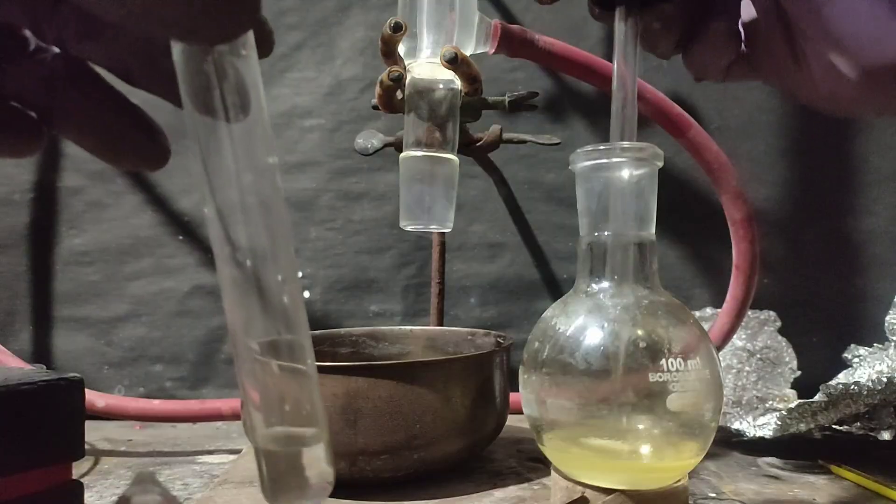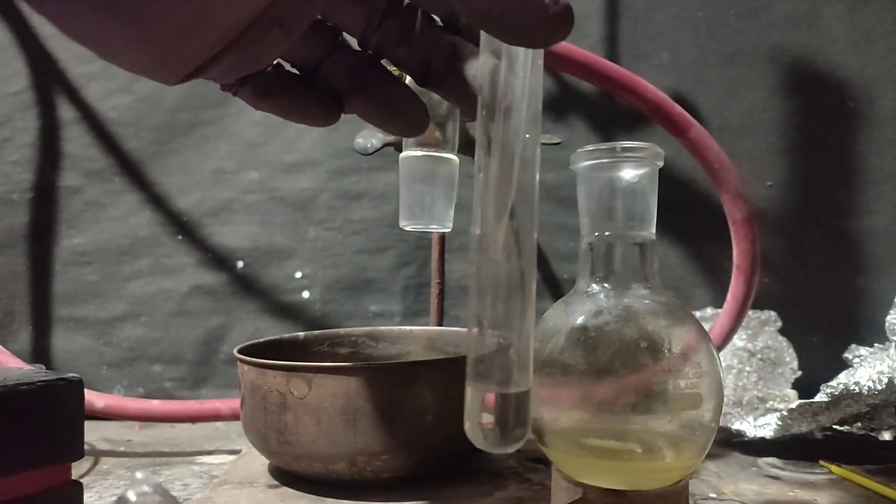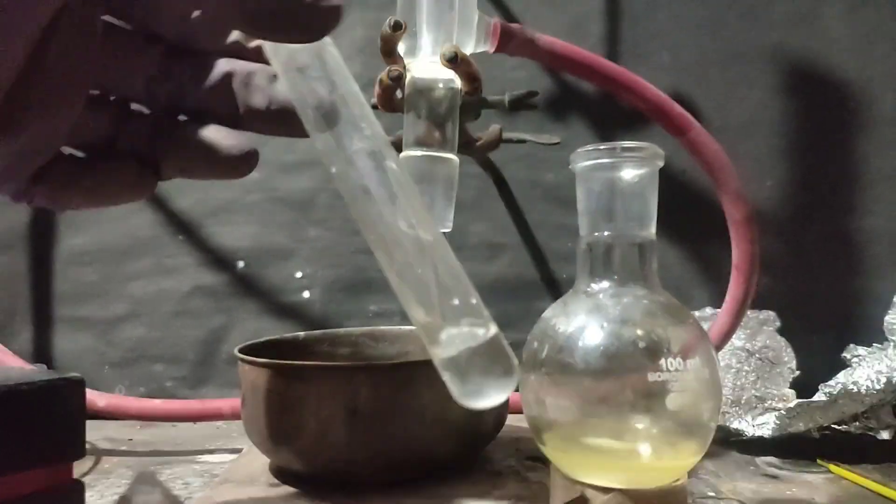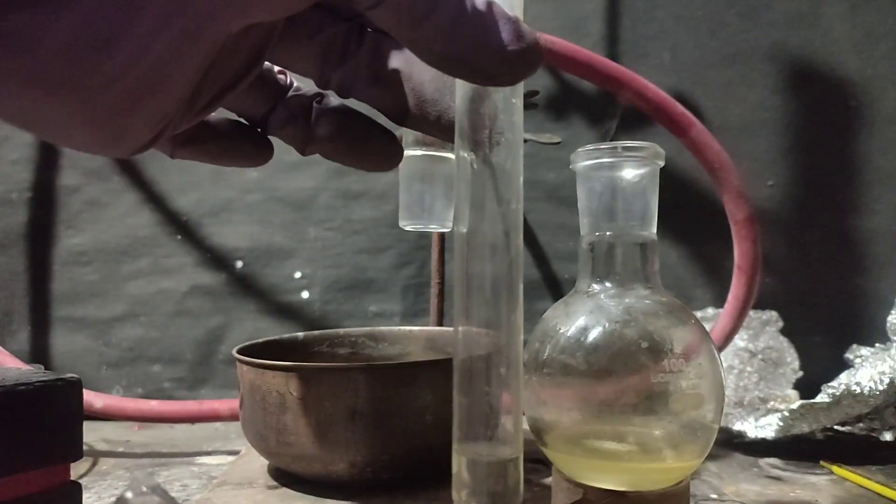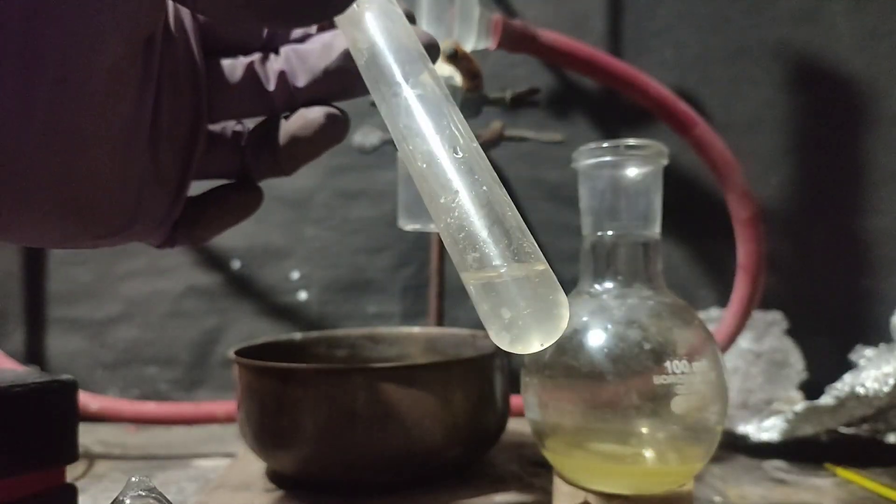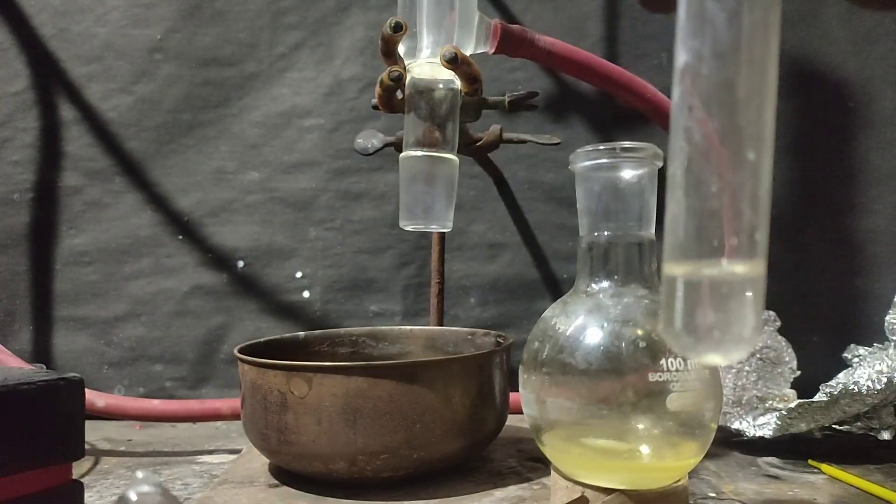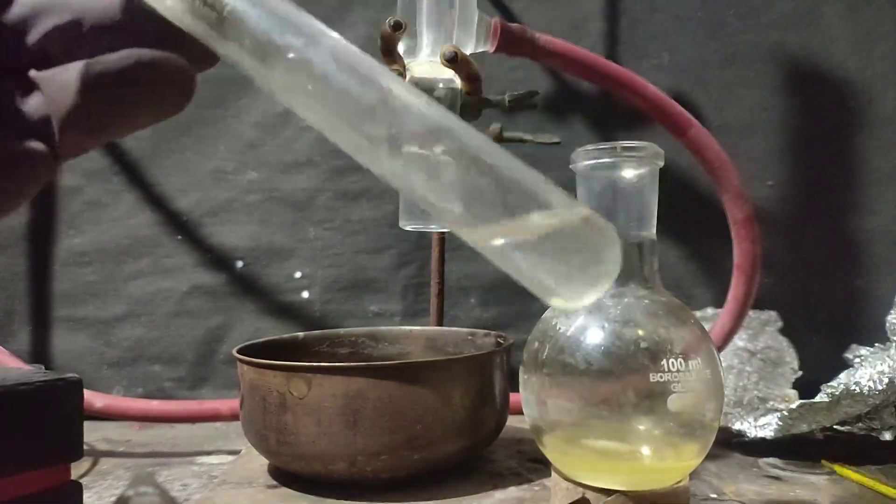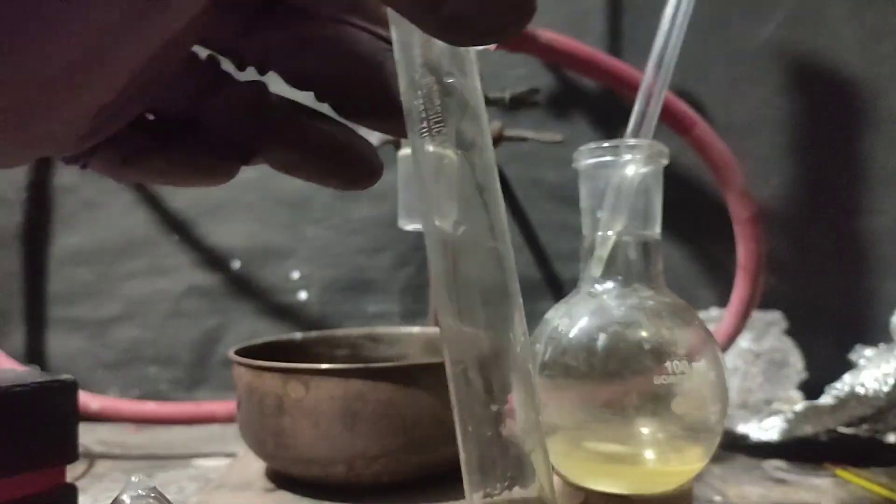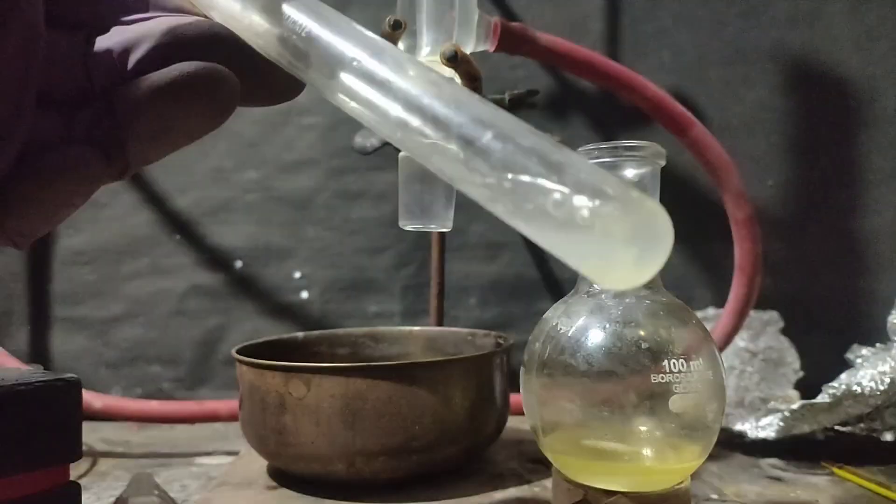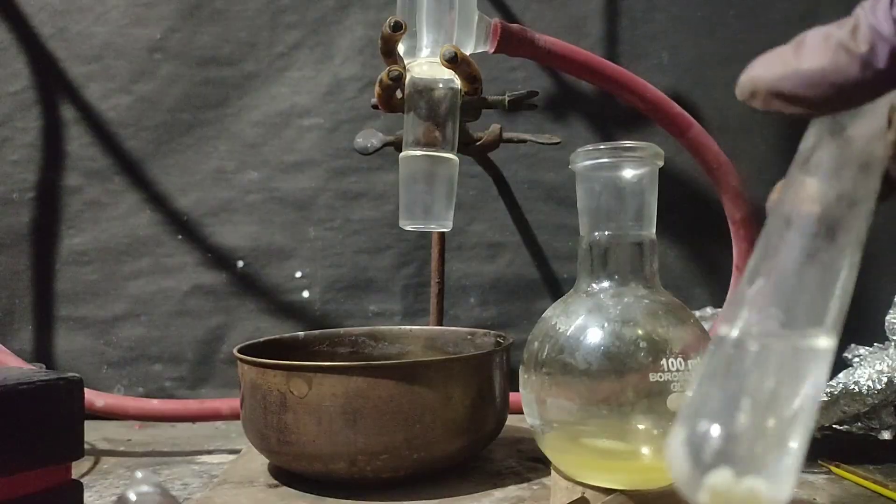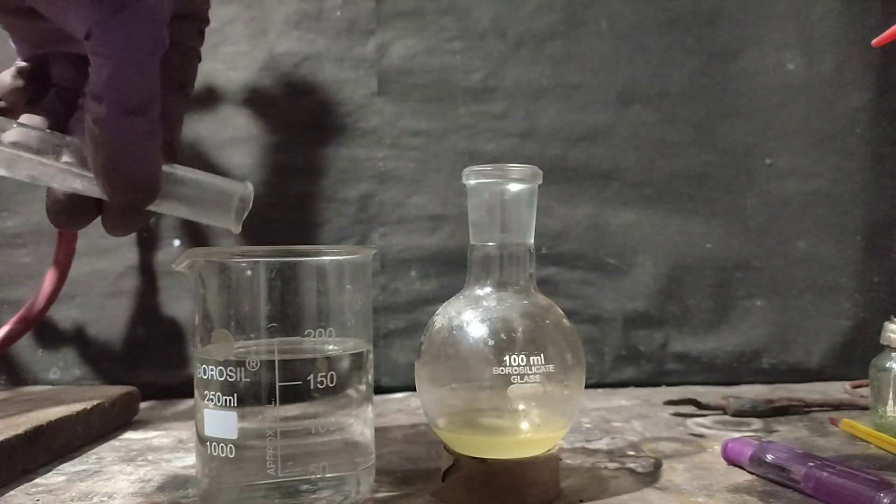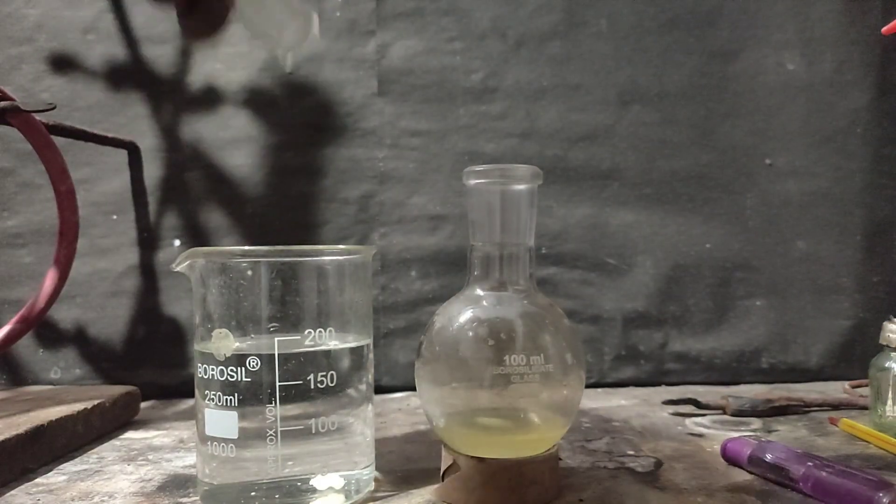After the reaction mixture cooled down, it had two layers: the upper organic layer and the lower acid layer. The melting point of 2,4-dinitrotoluene is 70 degrees Celsius so it should solidify, but it was still liquid. To check if we really made 2,4-dinitrotoluene, I added some drops of the organic layer into water. After shaking for a while, a white solid chunk formed, so I decided to do the workup.